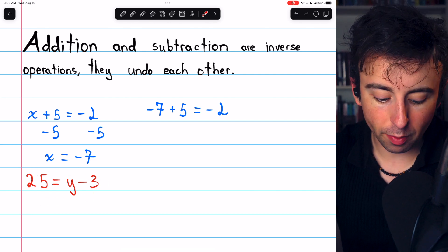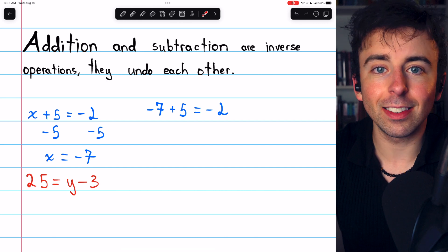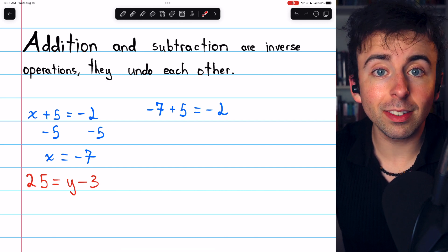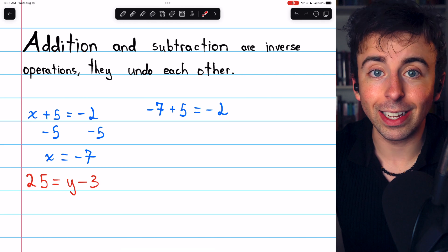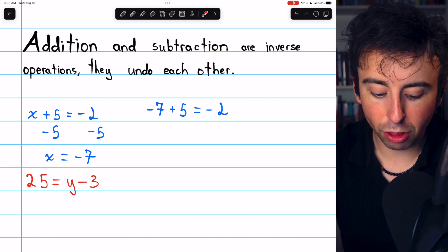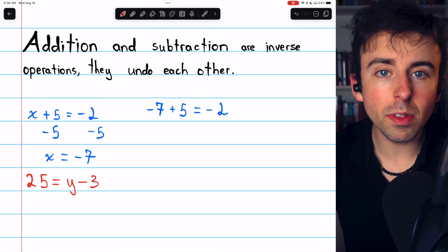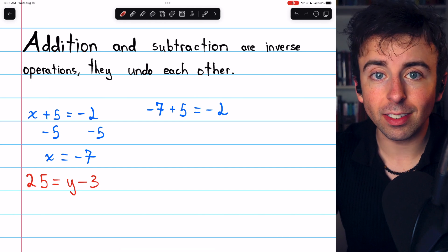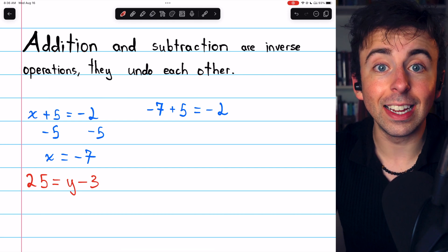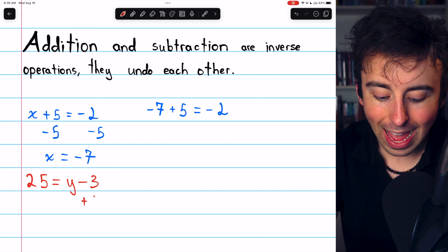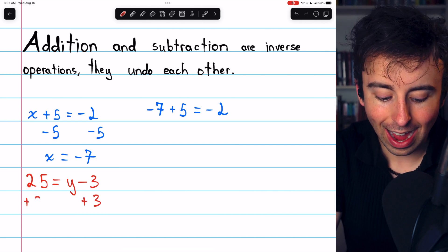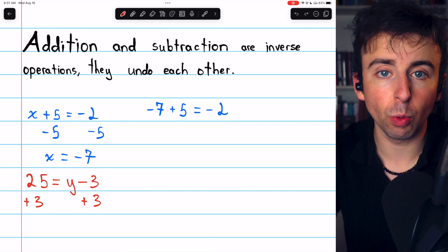In this case, we're solving for y, and it doesn't matter that it's on the right side of the equation, the objective is still the same, get y by itself. In this case, 3 is being subtracted from y, and we can undo that using the inverse of subtraction, which is addition. So we simply add 3 to both sides to get rid of that subtraction of 3.